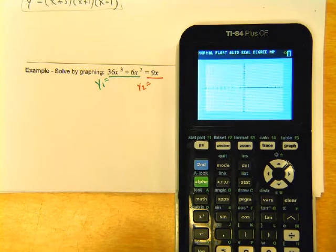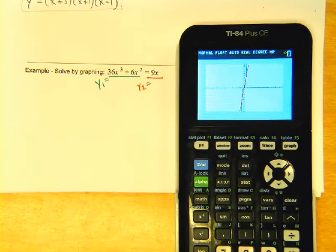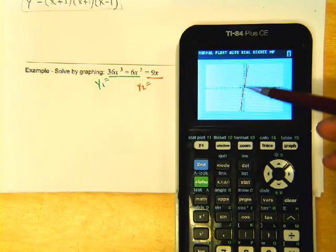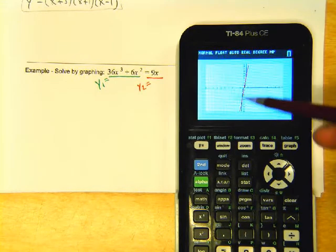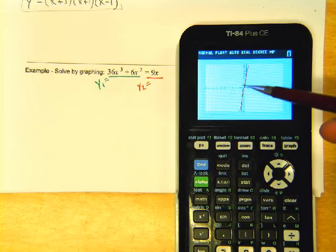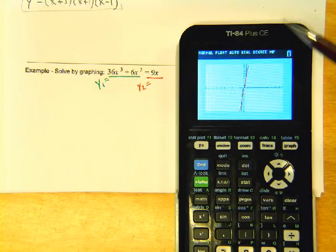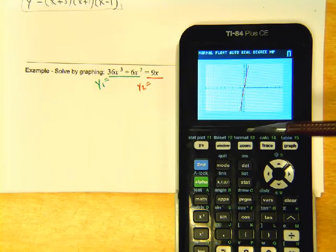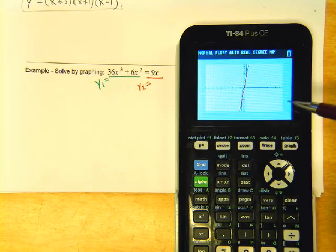And you can do a zoom 6 to reset your window and ooh it looks like there's a lot of action going on right in there but it's really hard to see. So yeah, we need to zoom in and that's going to be the hardest problem of solving these kind of problems is finding the right window to get the intersections.